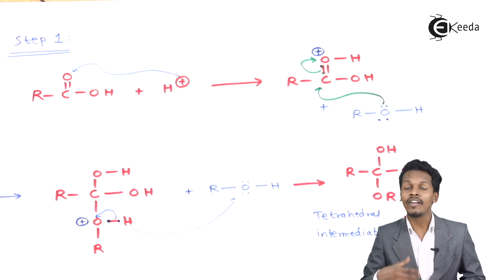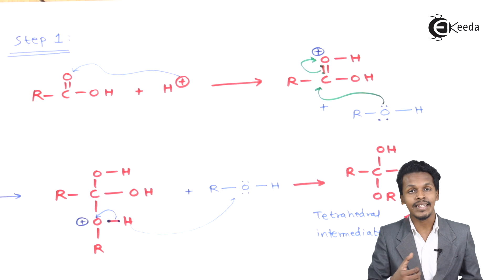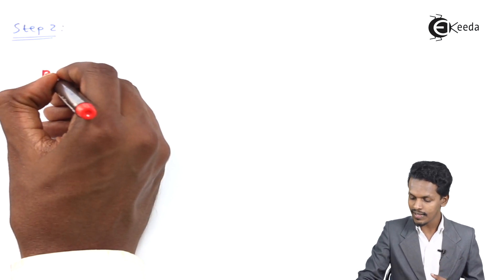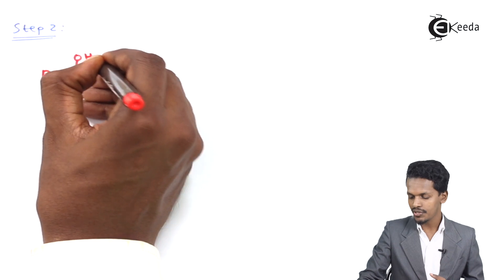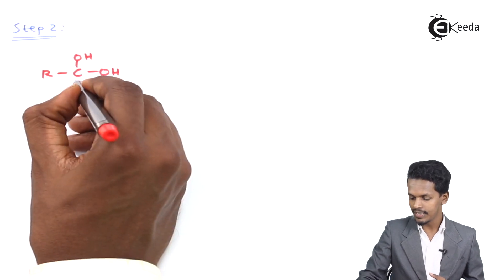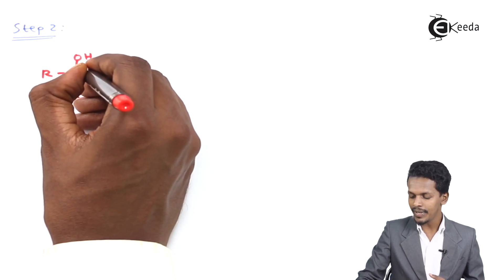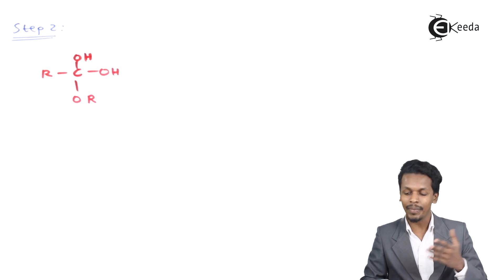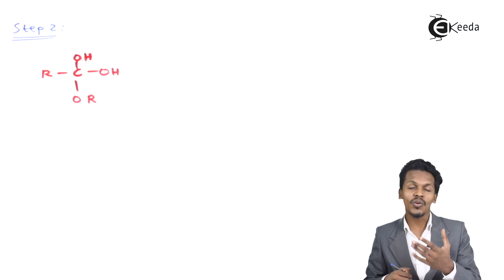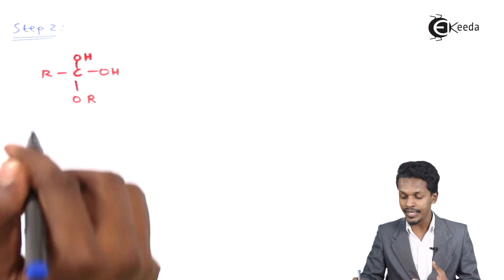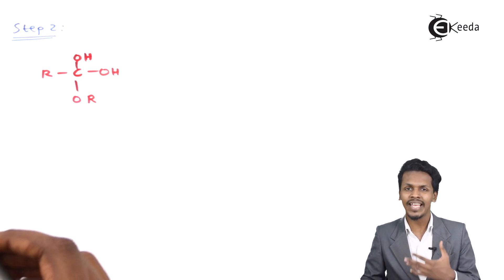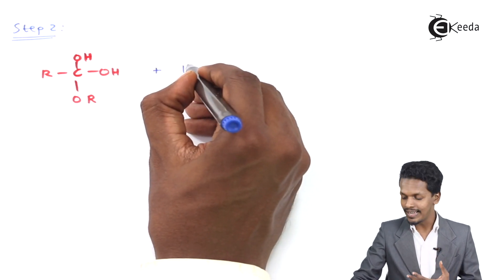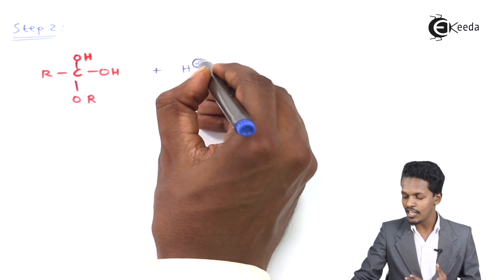In Step 2, the tetrahedral intermediate RC(OH)₂(OR') is used. This molecule can also be called ester hydrate. Under acidic conditions, the H⁺ ion attacks one of the OH oxygen atoms of this intermediate.